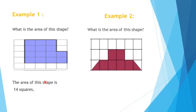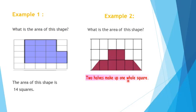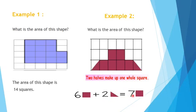Example number 2. What is the area of this shape? This shape consists of whole squares and half squares. To find out its area, we have to keep in mind that 2 halves make up 1 whole square. Its area will be 1, 2, 3, 4, 5, and 6 whole squares, plus these 2 half squares equal to 7 squares. So the area of this shape is 7 squares.